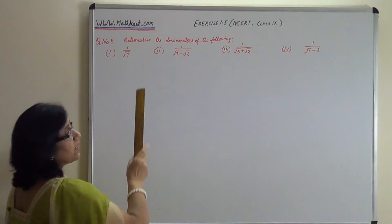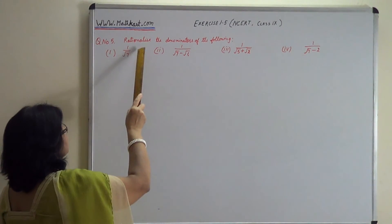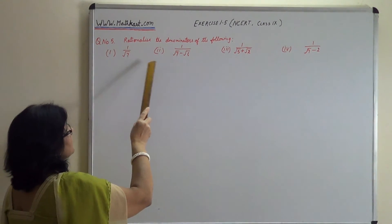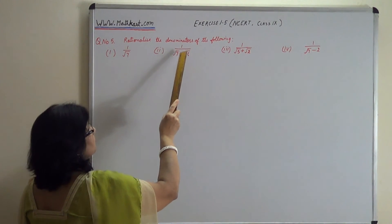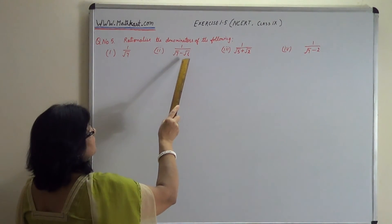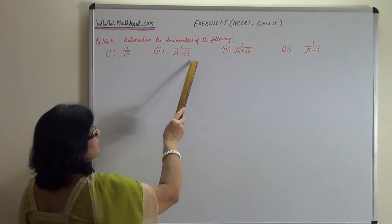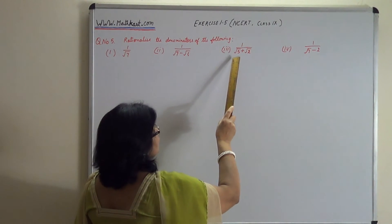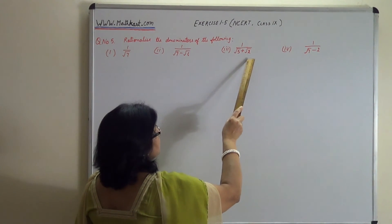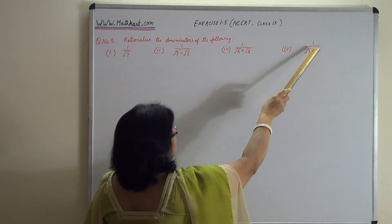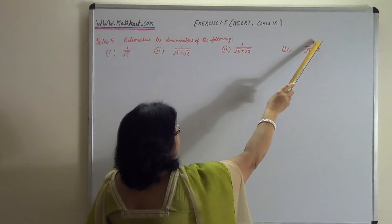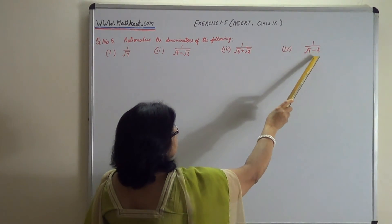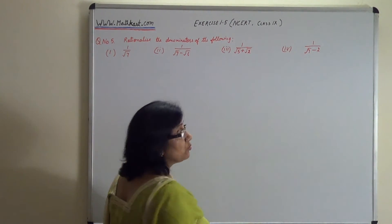There are four parts. The first part is 1 upon root 7, the second part is 1 upon root 7 minus root 6, the third part is 1 upon root 5 plus root 2, and the fourth part is 1 upon root 7 minus 2.